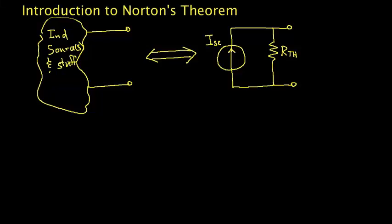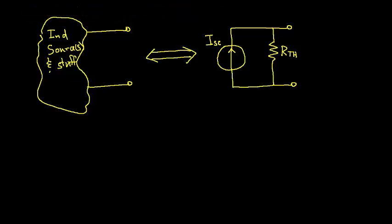Welcome to this video in which we introduce Norton's Theorem. Norton's Theorem is essentially — conceptually at least — the same thing as Thevenin's Theorem, in the sense that we have a circuit which consists of independent sources, one or more, and other stuff, where the other stuff would be resistors and dependent sources.